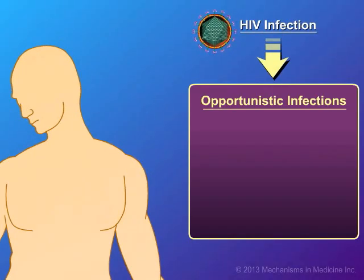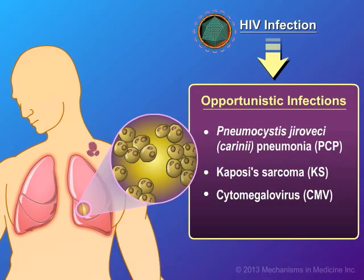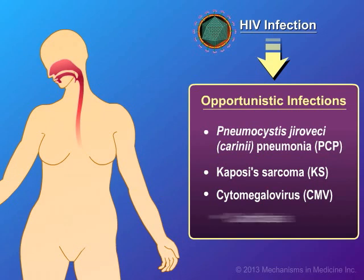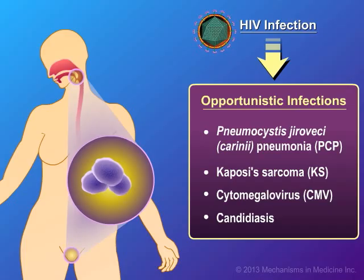The most common opportunistic infections are pneumocystis pneumonia, a lung infection; Kaposi's sarcoma, a skin cancer; cytomegalovirus, a viral infection that usually affects the eyes; and Candida, a fungal infection that can cause oral thrush, a white film in the mouth, or infections in the throat or vagina.